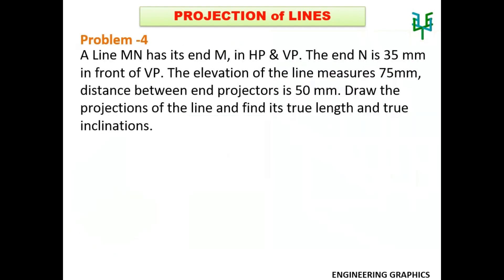A line MN has its end M in both HP and VP. The end N is 35mm in front of VP. The elevation of the line is measured as 75mm, and the distance between projectors is 50mm. Draw the projections of the line and find its true length and true inclinations.